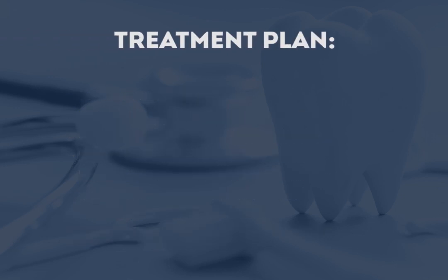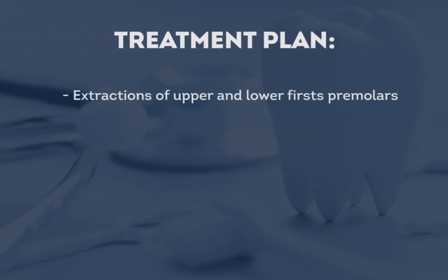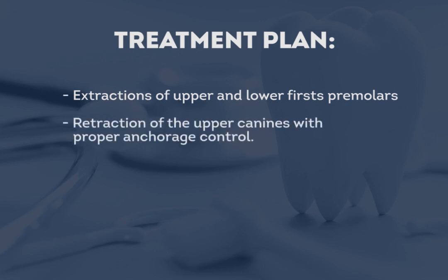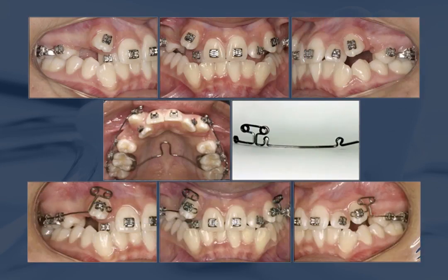The treatment plan for this case was extraction of the four first premolars, followed by retraction of the upper canines with proper anchorage control. A fixed transpalatal bar was used for anchorage control. The four first premolars and the primary canines were extracted.